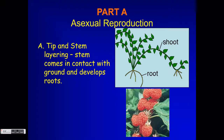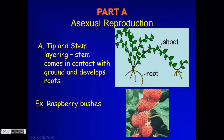One type of asexual reproduction is called tip and stem layering. With tip and stem layering, just like with raspberry bushes, what happens is the stem grows really long and falls over, making contact with the ground. When it makes contact with the ground, roots form and a whole new shoot or stem starts to grow. If you cut this shoot, you'd have two separate plants that are genetically 100% identical — in other words, you've made a clone.